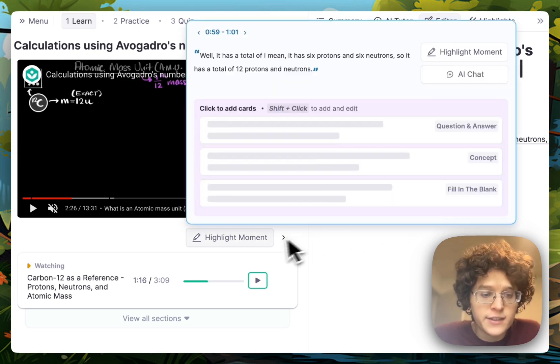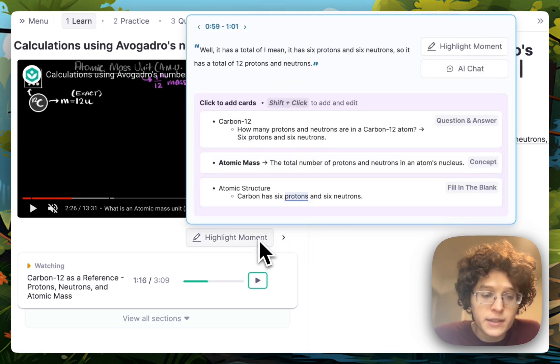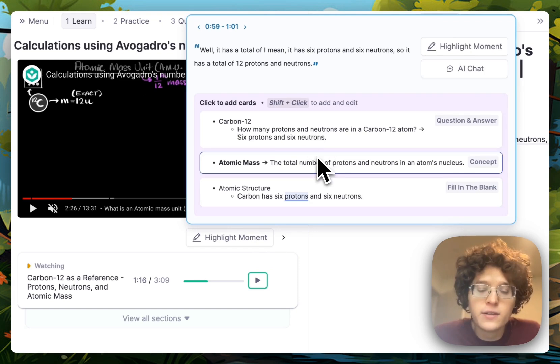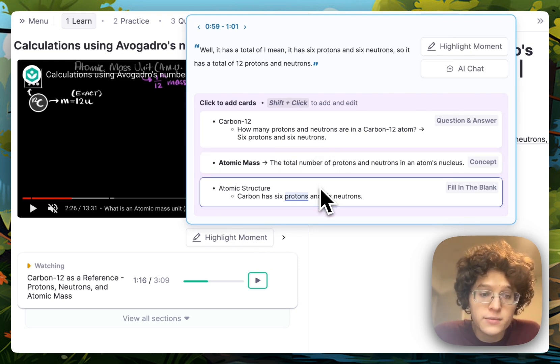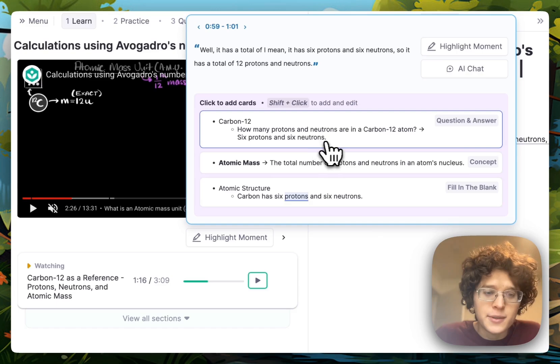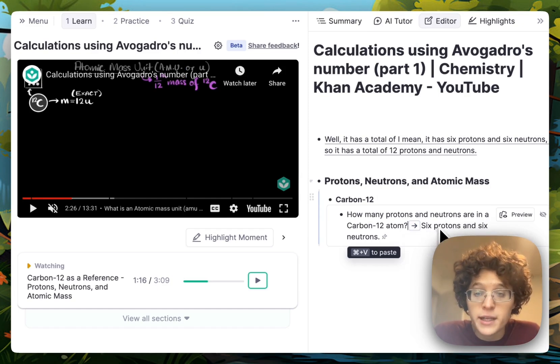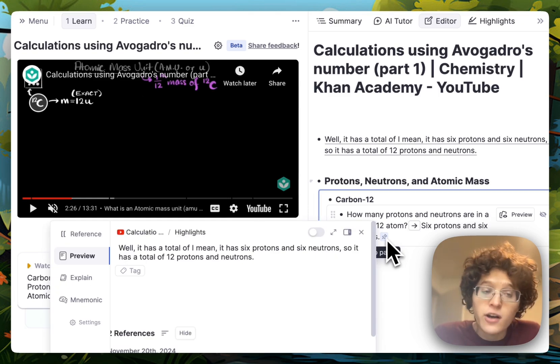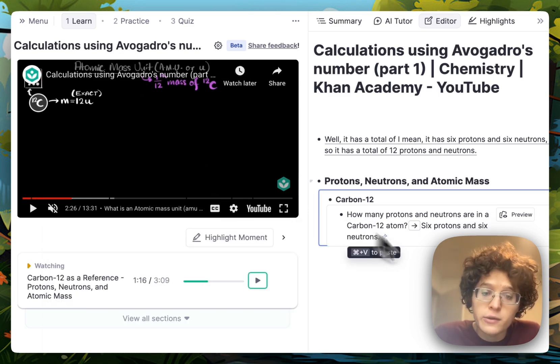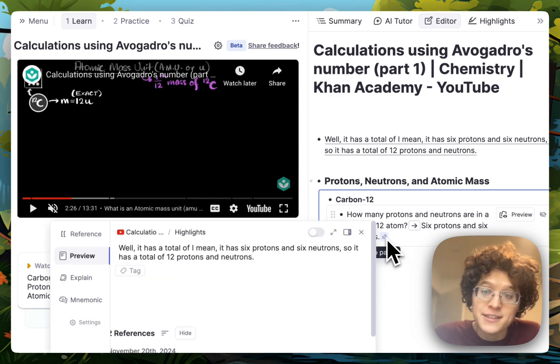You can also generate flashcards in a single click from the highlight moment button. Here you can see that a few different kinds of flashcards are provided. I like this first one best here, so if I click it, it will immediately be added to my editor, where I then can make any further adjustments or just immediately begin practicing it. You'll also notice that a highlight in the form of a pin is automatically made to this portion of the video so that I can go back to there later when practicing the card.